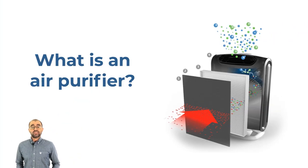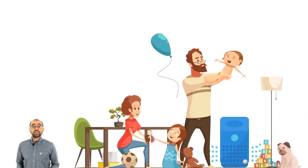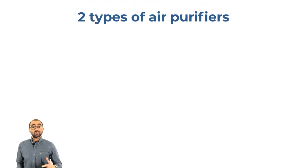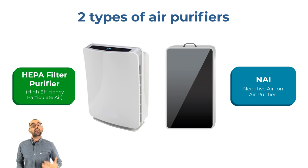So what exactly is an air purifier? It's a device used to clean particles out of the air. They are meant to improve air quality of our indoor spaces. In this video, we'll be focusing on two types of air purifiers: the high efficiency particulate air, or HEPA filter purifiers, and the negative air ion, or NAI purifiers.